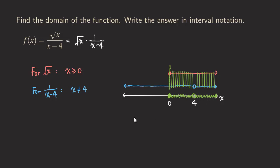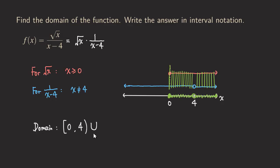So now based on the shading, we can write down the domain. The domain for this function starts at zero, and because we include zero we use a bracket. So starting from zero with a bracket, we go all the way to four. Because four should not be included, we use parentheses. Remember: if you want to include an endpoint use a bracket, but if you don't want to include an endpoint use parentheses. Then there is another interval, so we put a union symbol here, which looks like a U.